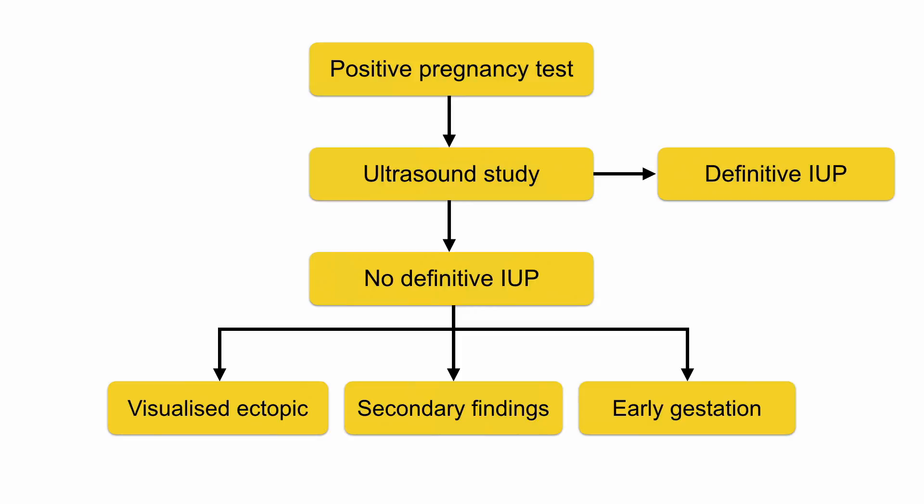Or you have secondary findings that are concerning for a ruptured ectopic pregnancy, such as free fluid in the pelvis or a positive FAST exam. Again, you would consult your OB/GYN consultant for further definitive management. Your third option would be very early gestational age. If this is the case, your patient would require close follow-up and monitoring and a repeat ultrasound within one week to identify their definitive IUP.